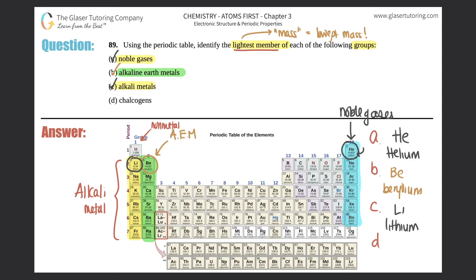Last but not least, we got chalcogens. Where is that? You can remember it as the chalcogen group or just the oxygen group. Chalcogens are the group that starts with oxygen, which would be this group down here. Which one would be the lightest? It would be the first element of the group, which would be oxygen.